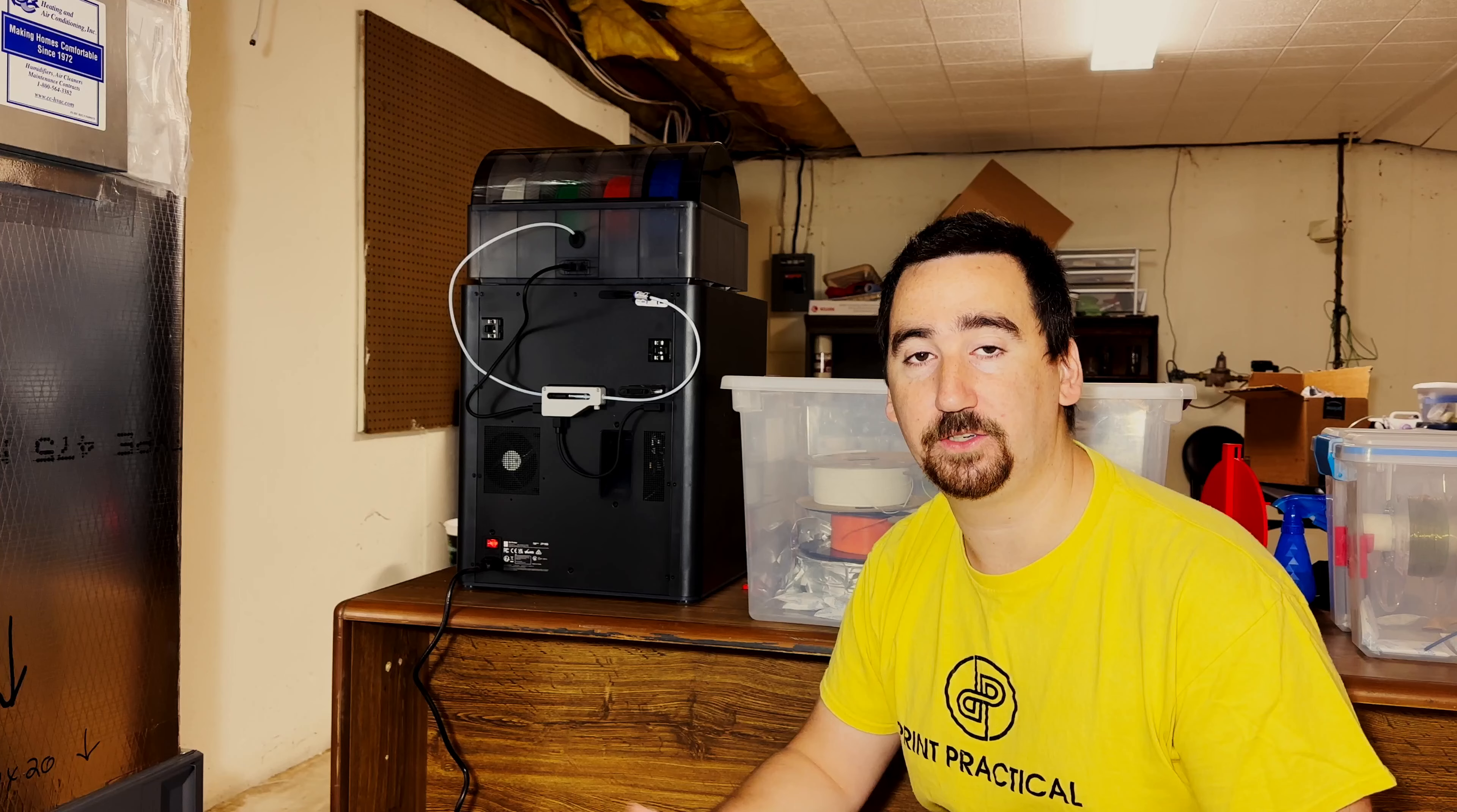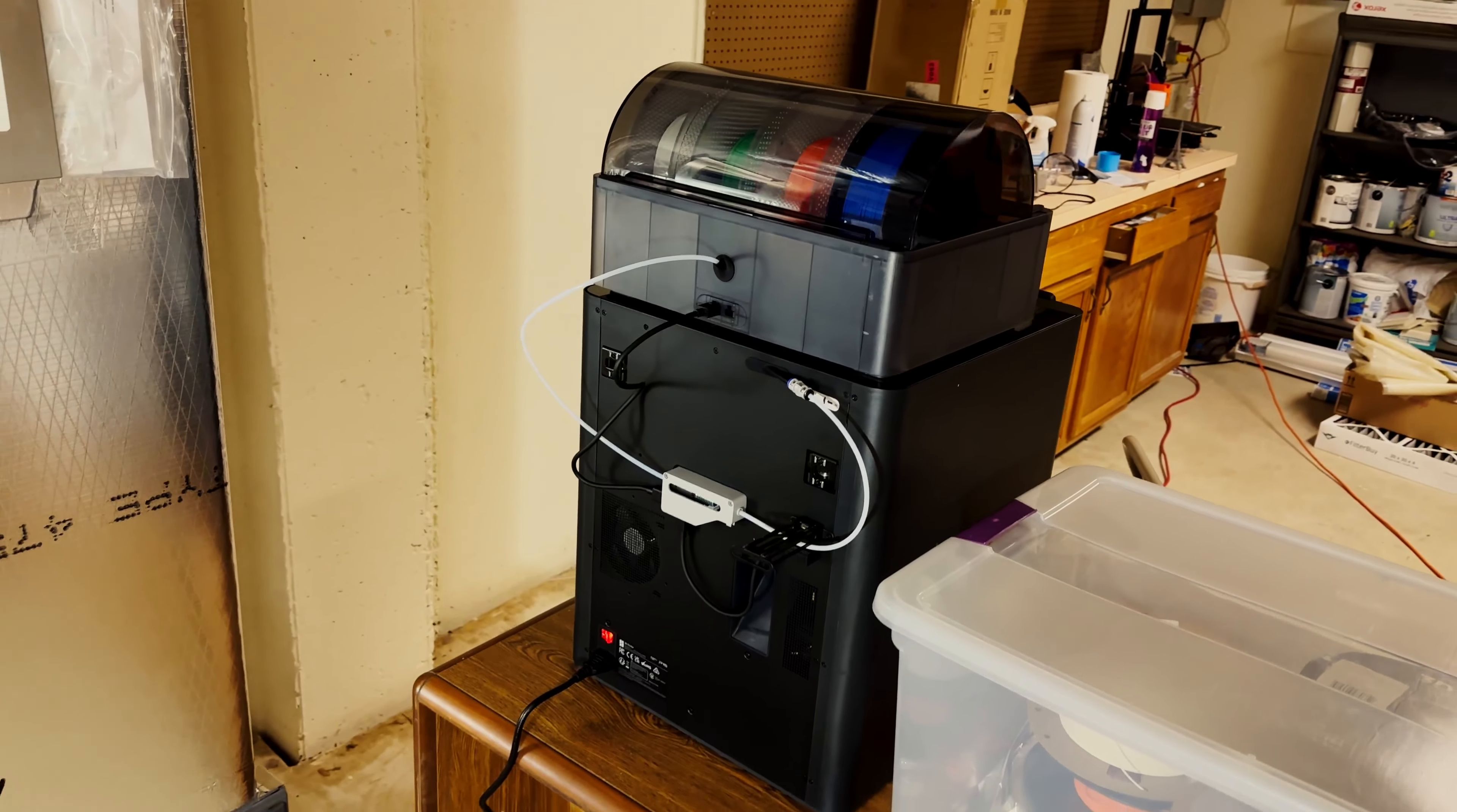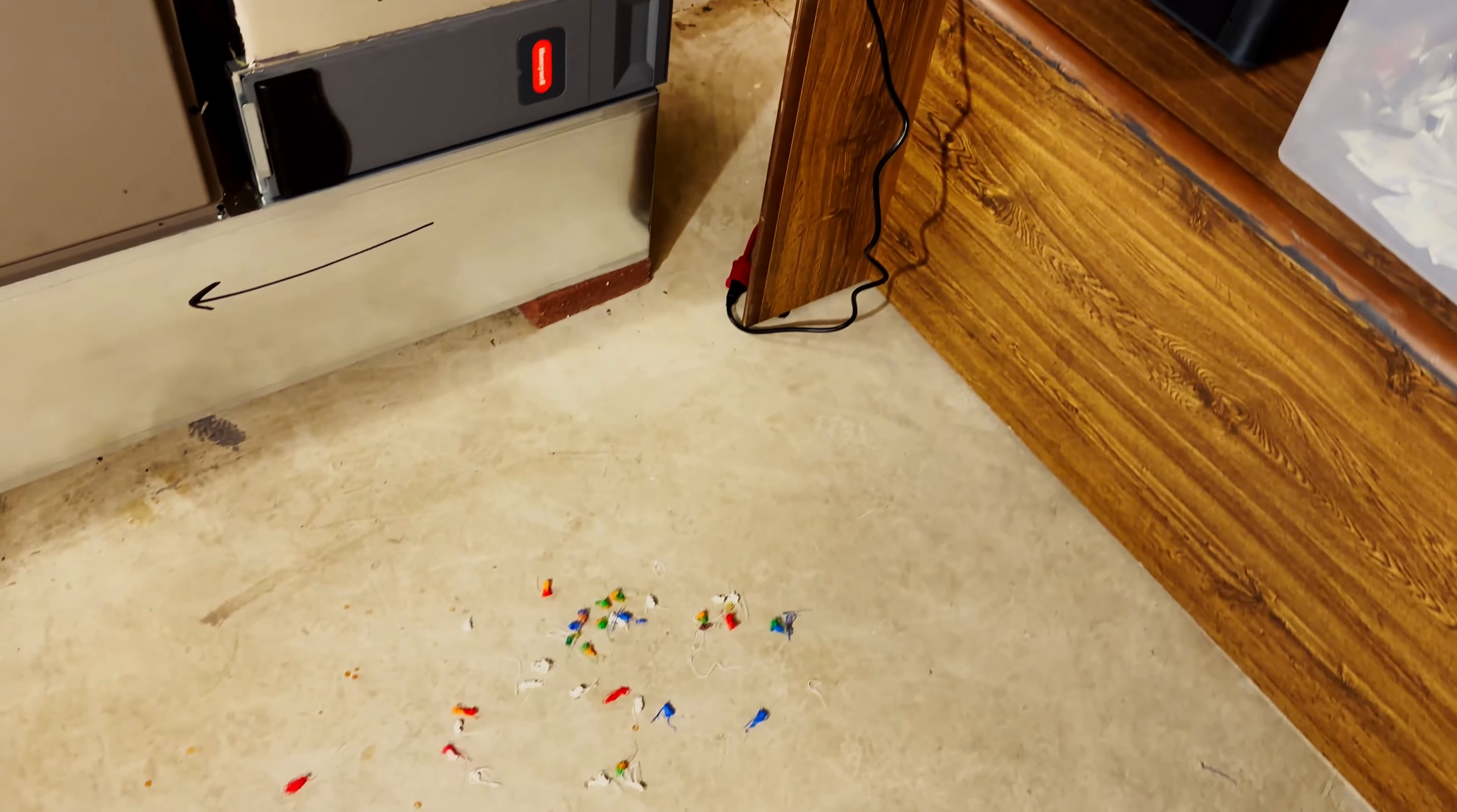My P1S has an AMS unit attached, so anytime it does a color change or it purges the nozzle on the beginning of a print, it shoots out a little nugget on the floor. I decided that I wanted to draw a small trash can that I'm going to put behind my printer.